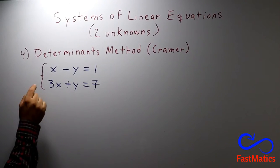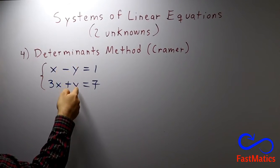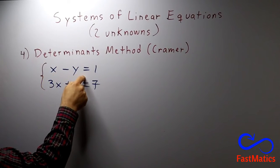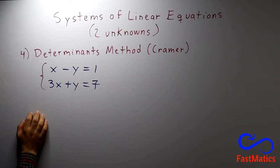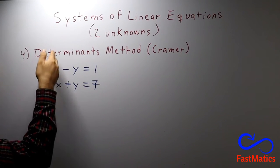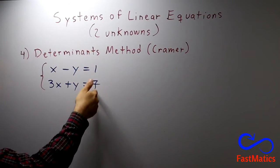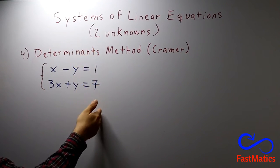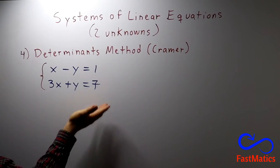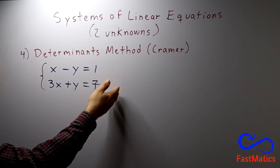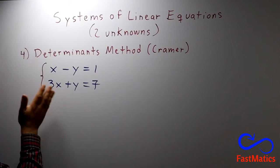First of all, we have to identify that we have a system with two unknowns and two equations, and that x is with the x, y with the y, and the numbers alone are together in columns. If the equations are not ordered, you have to order them in order to do this method. It is very, very important.